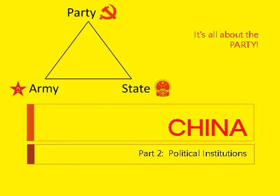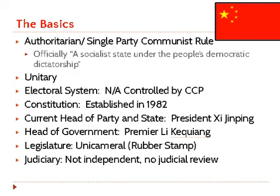This third set of lecture notes brings us into our second theme to discuss with China. The first two looked at the making of the modern Chinese state; this second theme is looking at the political institutions in China, and this is our foray into discussing a very strong one-party authoritarian system compared to the other countries we will cover during the rest of the semester.